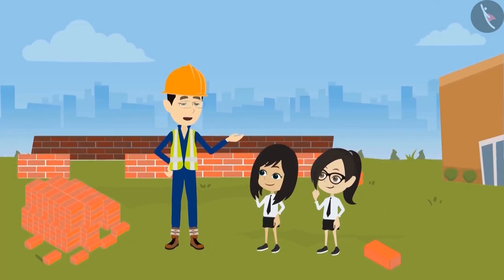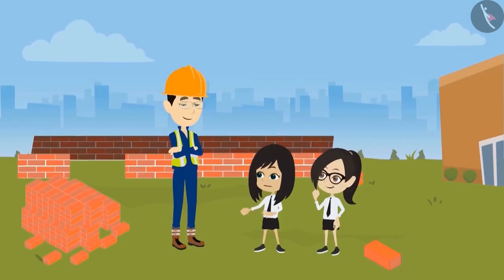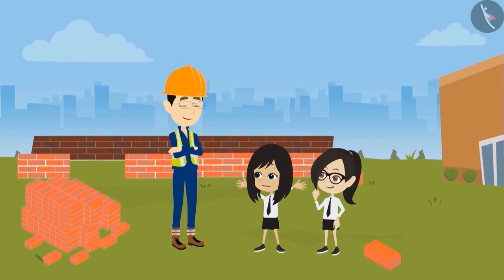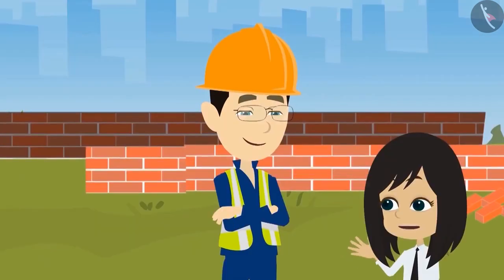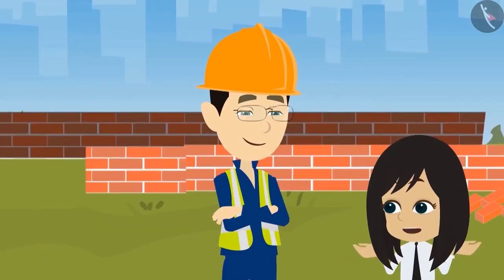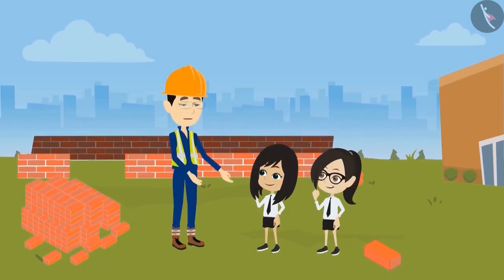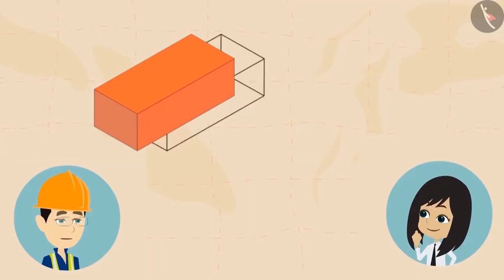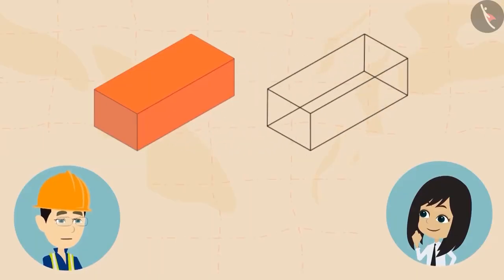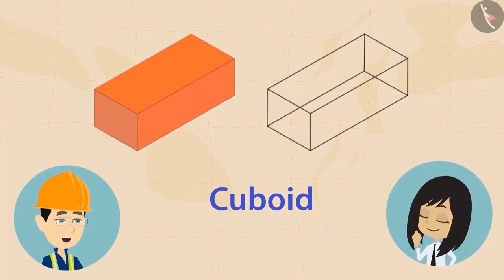Have you understood? Now we have understood. But here all the bricks are of the same shape — are all bricks of the same rectangle shape? Yes, all the bricks are of this shape — a rectangular box. In mathematics, this shape is called a cuboid.